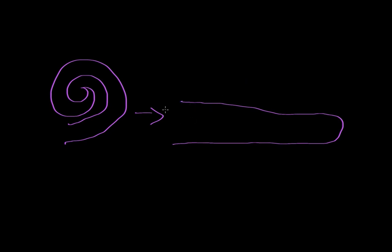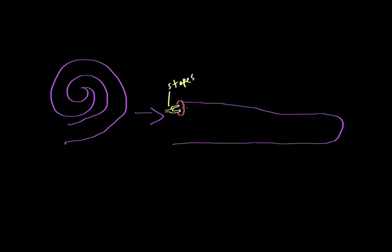You've got this little bone called the stapes right here. The stapes is connected to the other two bones and then the eardrum, so it's moving back and forth at the same frequency as the sound wave. The stapes is connected to a little oval membrane called the elliptical window, which gets pushed in and out as the stapes moves back and forth. There's fluid inside the cochlea.